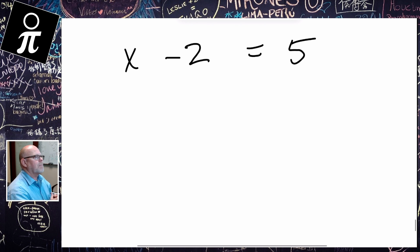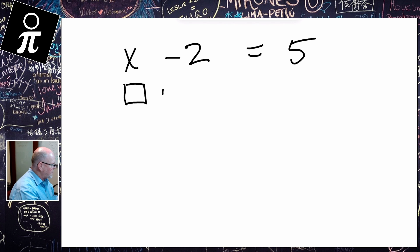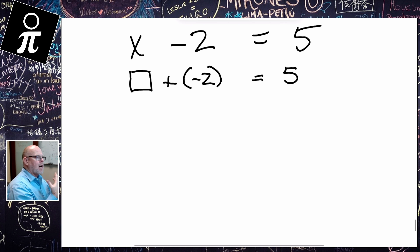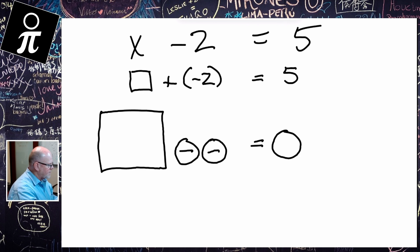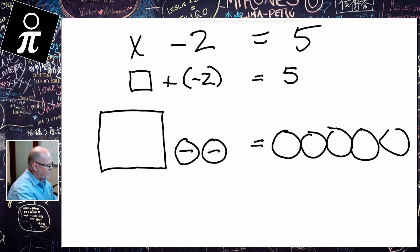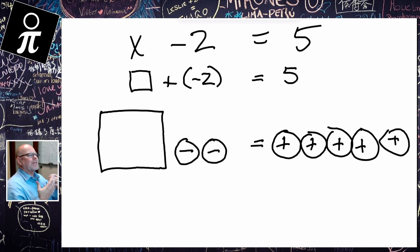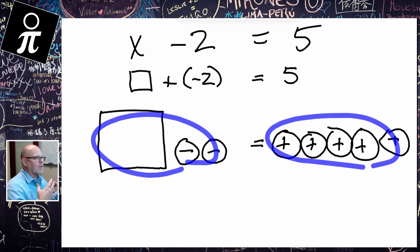Now let's look at x minus 2 is equal to 5. So this is a box plus a negative 2 has to equal 5. Pictorially, that's going to be a box and then two negatives, and that's supposed to equal five positives. Now at this point, it's kind of hard to see how the left side could ever end up looking like the right side.